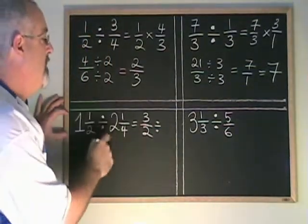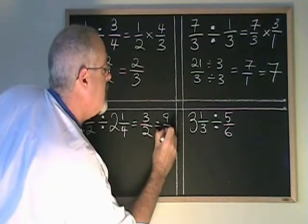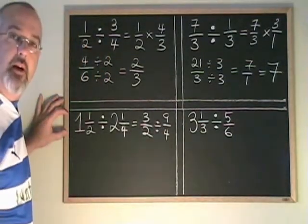2 times 4 is 8 plus 1 is 9. The second fraction becomes 9 quarters. Now I have 3 halves divided by 9 quarters.